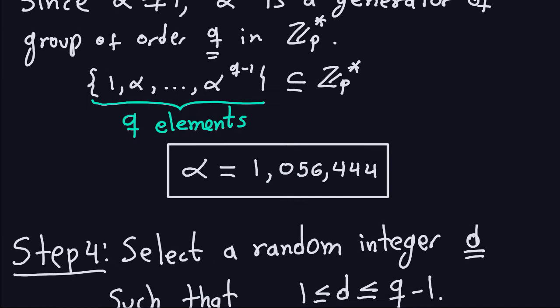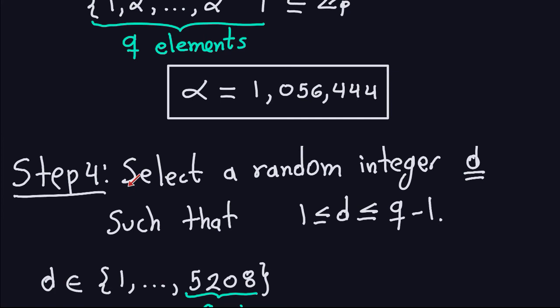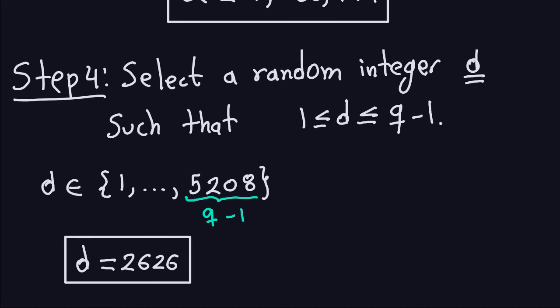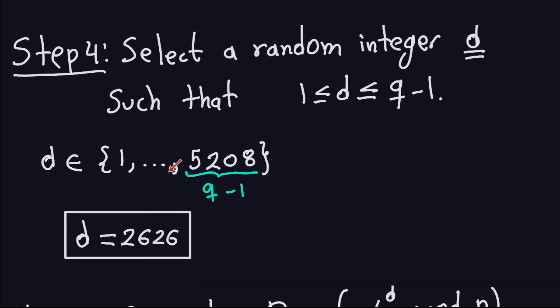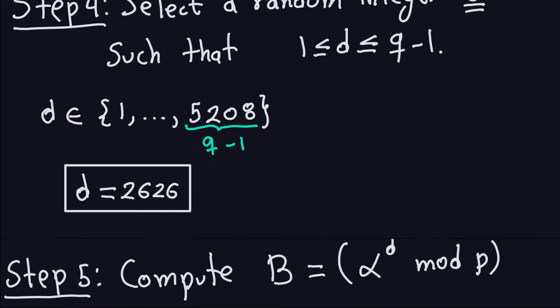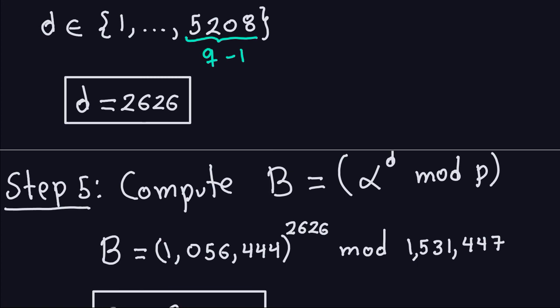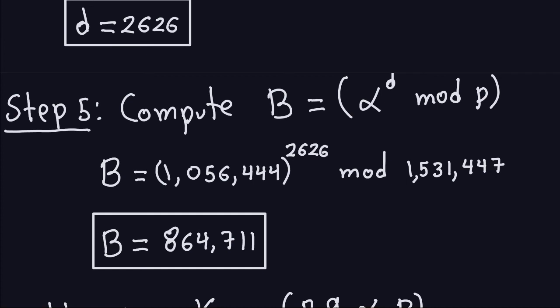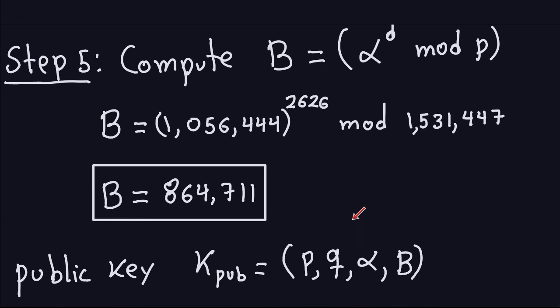Step four: select a random integer D between 1 and Q−1. Since Q = 5209 in this example, D must be between 1 and 5208. Let's choose D = 2626. Step five: compute B = alpha^D mod P using fast modular exponentiation, yielding B = 8647 11.